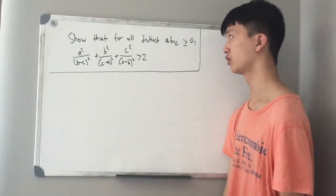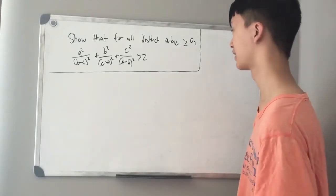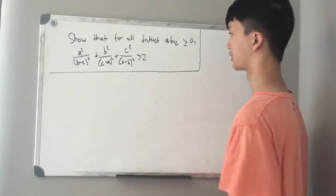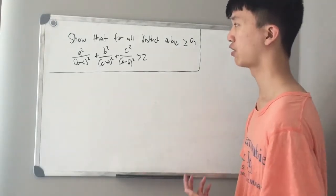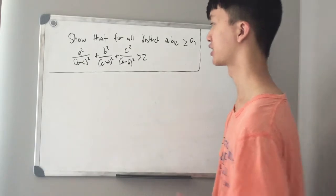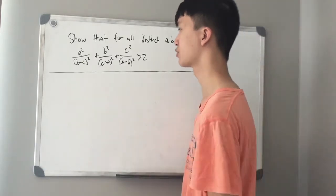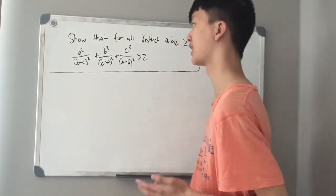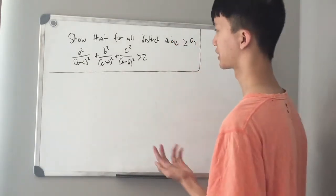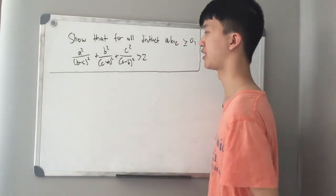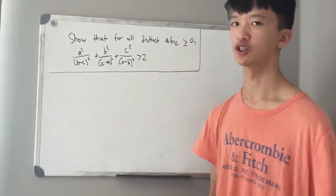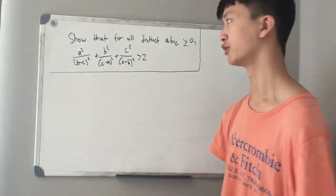Alright, so we want to show that for all distinct a, b, c greater than or equal to 0, a squared over (b minus c) squared plus b squared over (c minus a) squared plus c squared over (a minus b) squared is strictly greater than 2.